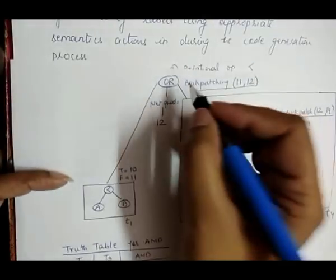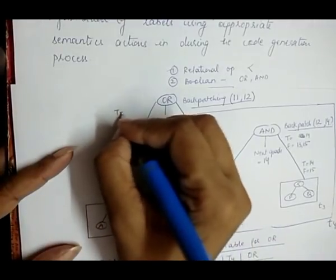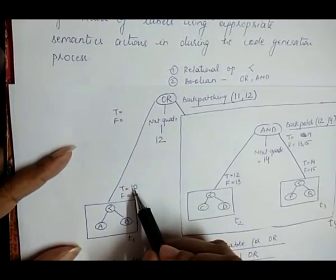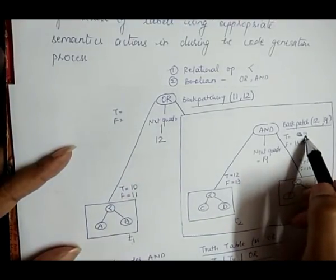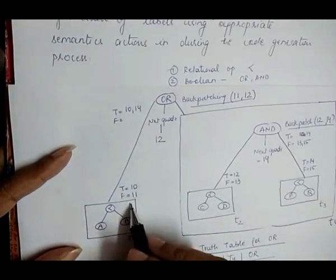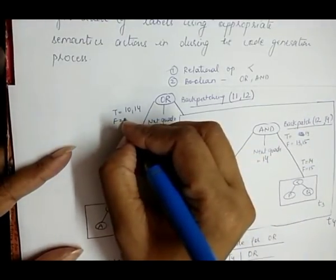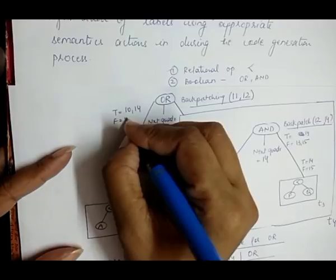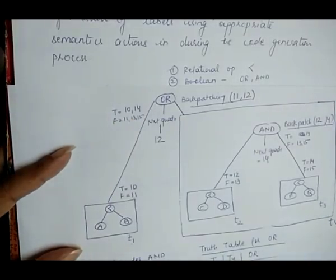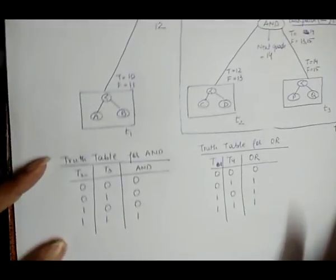So we have backpatch(11, 12) and backpatch(12, 14). To find the true and false values for the OR operation: the true value merges t1's true and t4's true, giving line 10 and 14, so true = {10, 14}. For the false value, merging t1's false and t4's false gives 11, 13, 15, so false = {11, 13, 15}. This is how backpatching works.